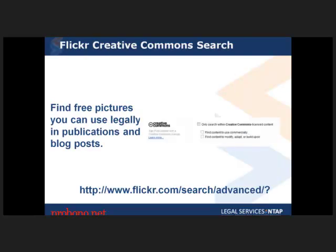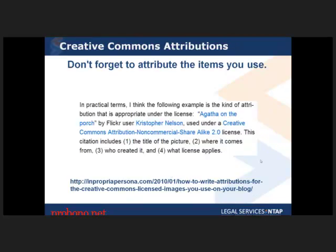When you're creating content and looking for pictures but don't have the resources to take photos yourself, go to Flickr. You can search for content licensed under the Creative Commons, which allows you to use images with attribution, and sometimes even commercially or to build upon. There's an entire search feature to find specifically that licensed content. It's also important to attribute Creative Commons items properly in your blog posts to give credit to the content creators.